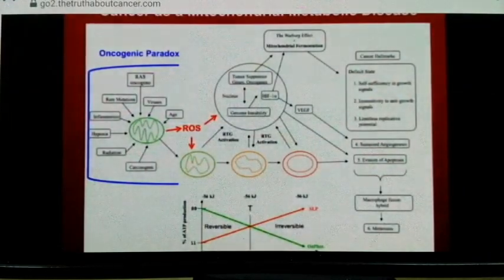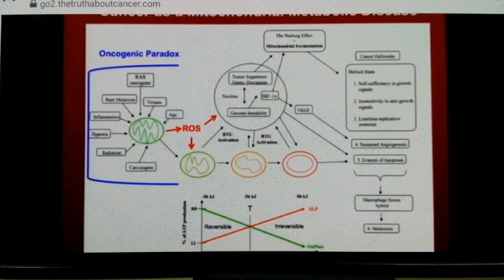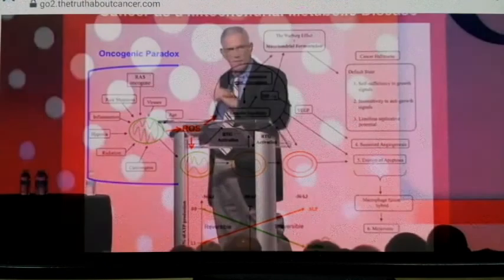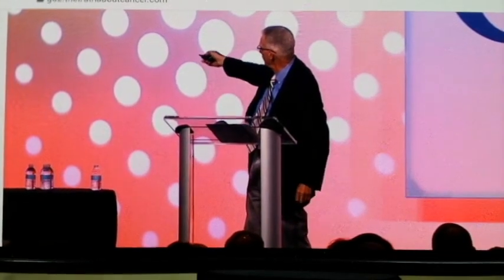Here are the hallmarks of cancer, as Hanahan and Weinberg have pointed out. Once the cell loses its capability of control, it enters the default state — the state it had before oxygen came on the planet some two-and-a-half billion years ago. All the cells were fermenting, they grew with unbridled proliferation, and stopped growing only when they ran out of fermentable fuels. That's all happening because the cells are re-entering their default state.